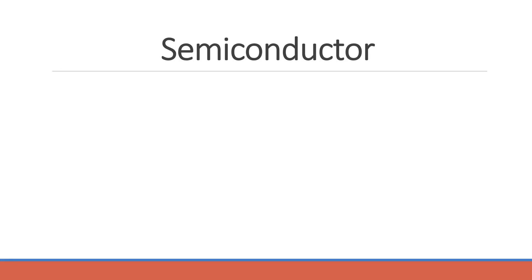The most basic semiconductor devices are diodes and transistors. A diode is a type of semiconductor device that allows current to flow only in one direction. For instance, if we need to convert AC (alternating current, which changes direction) to DC (direct current), we can use a diode since it allows current to flow in only one direction.